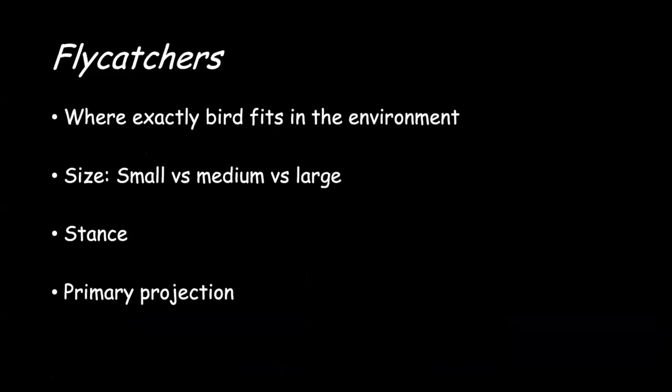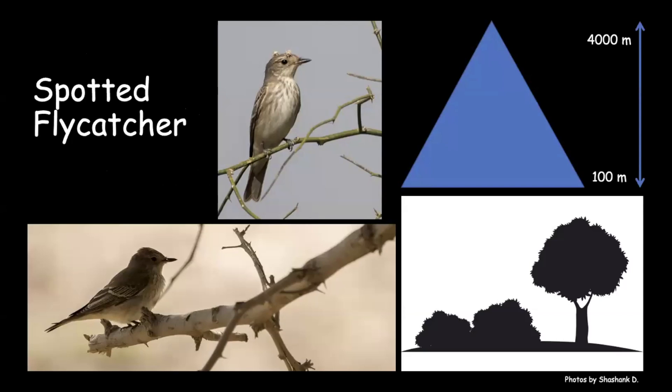When looking for flycatchers, I first look at how the bird fits into the entire habitat — is it on the top of a tree, middle of a tree, or in bushes? Then I look at the size: is it small like a taiga or red-breasted flycatcher, medium, or large like a large niltava or pale blue flycatcher? I also look at the stance — is it completely upright or slightly horizontal — and of course, the primary projection.